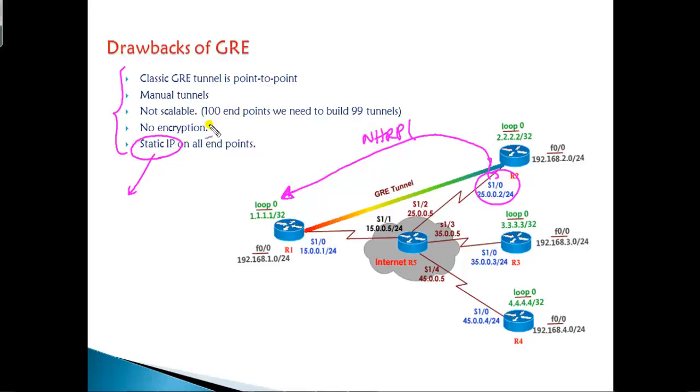But if you talk about normal GRE, those things are not possible. We must have static IP addresses. It doesn't support encryption, not really scalable because all are point-to-point tunnels and it has to be manually configured. These are the normal drawbacks of GRE, which led to some of the new implementations of VPNs like multipoint GRE implementations or using the DMVPN concepts.